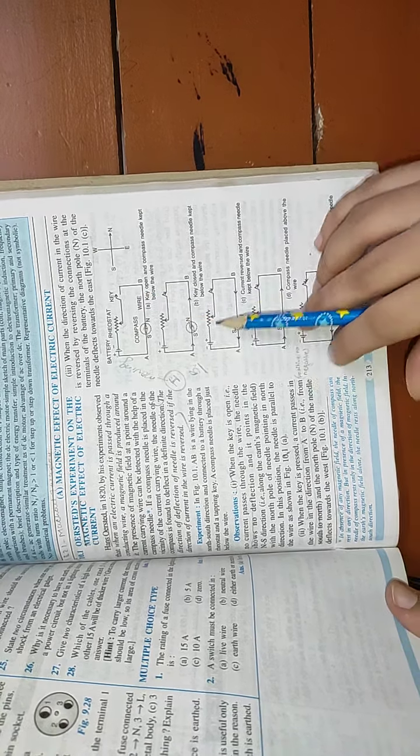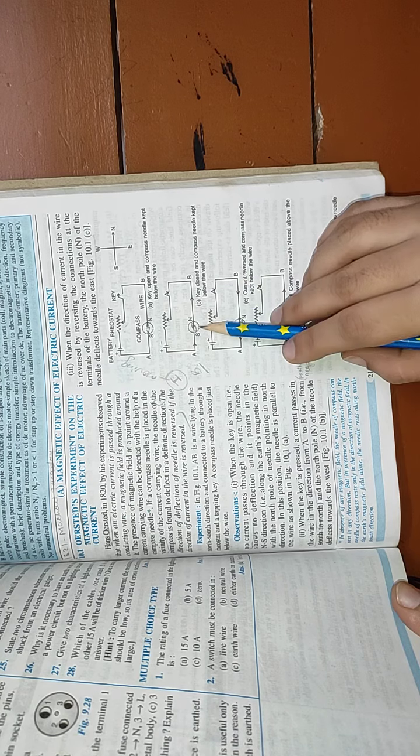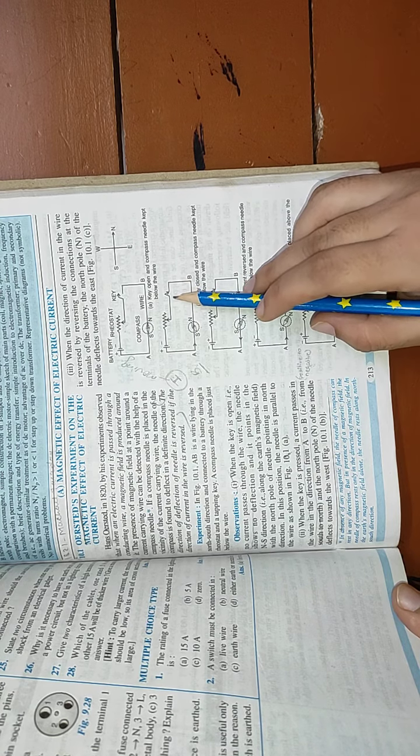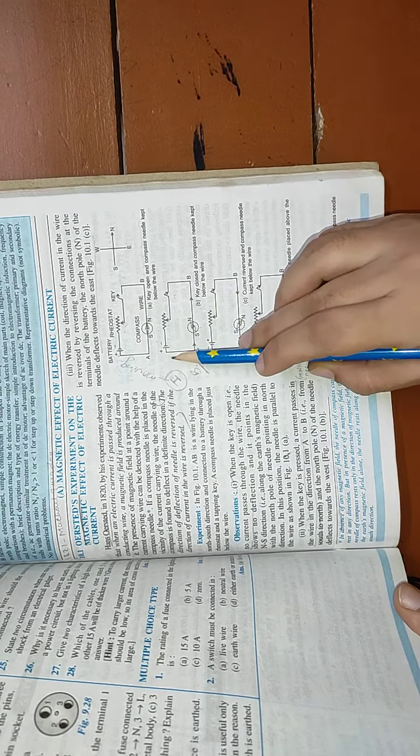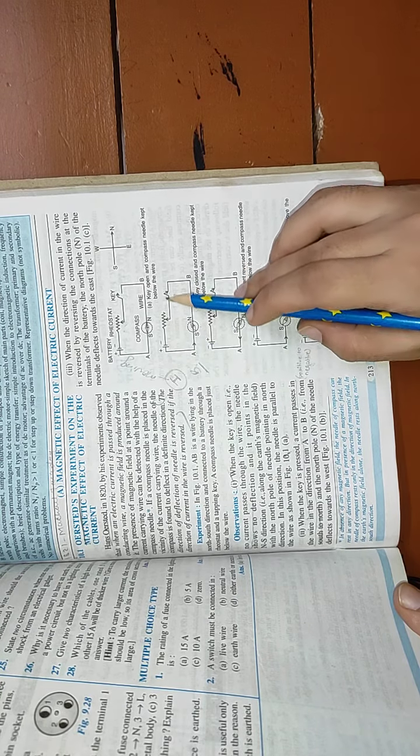In the second case, you can see everything else is same except the key and the needle. What happens when the key is closed? The current starts flowing in the circuit. The current will flow from positive terminal to negative terminal.